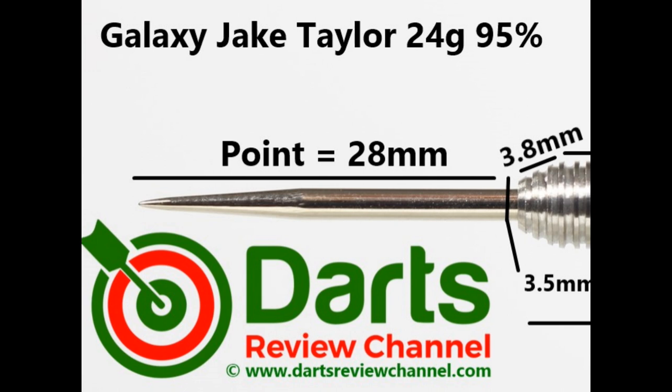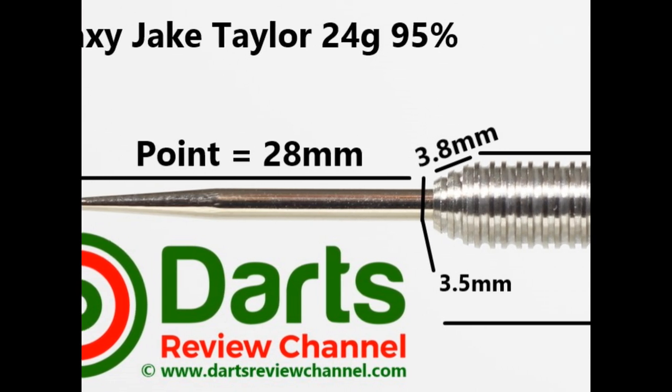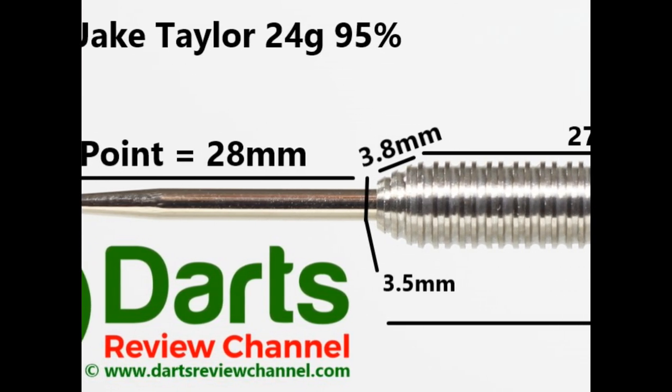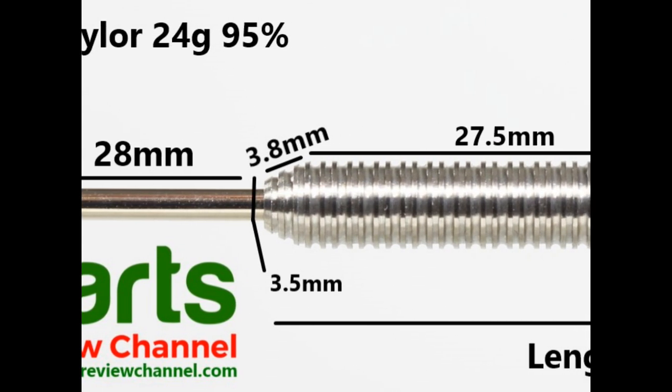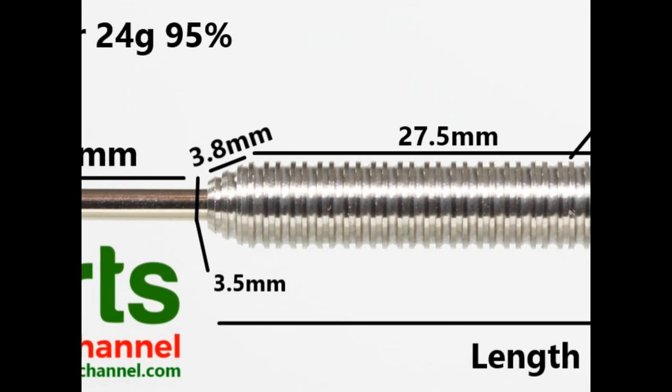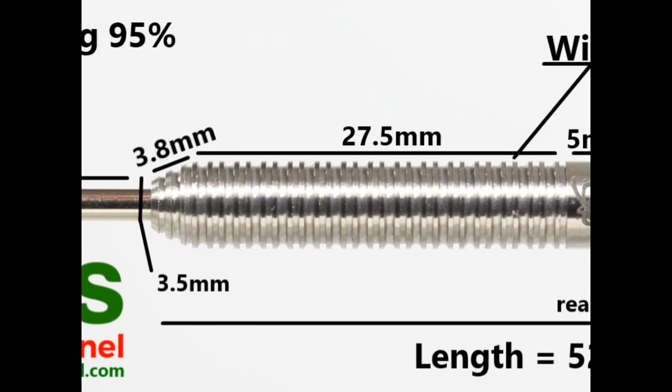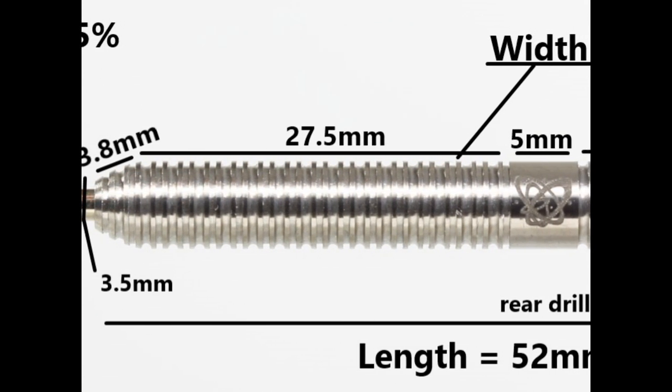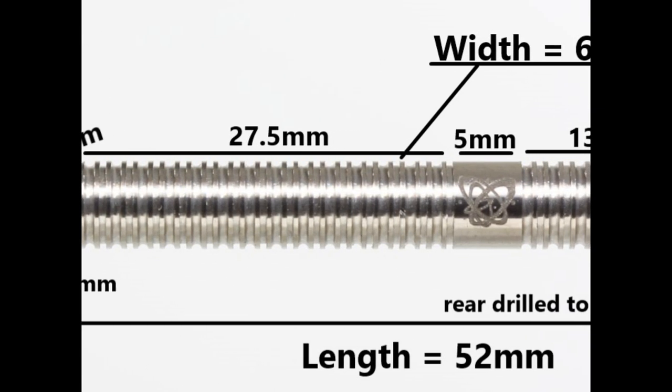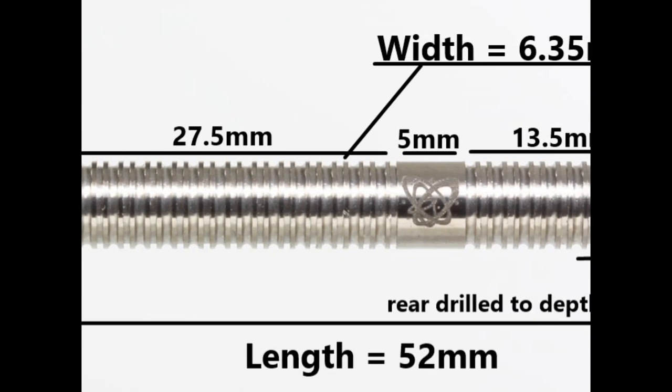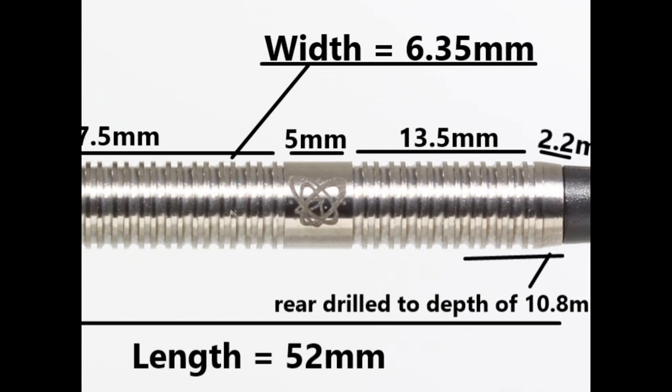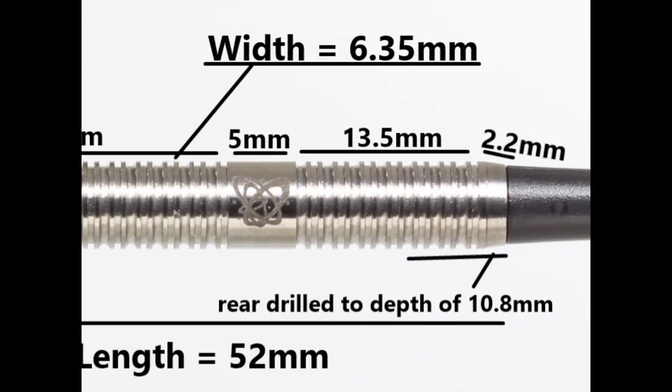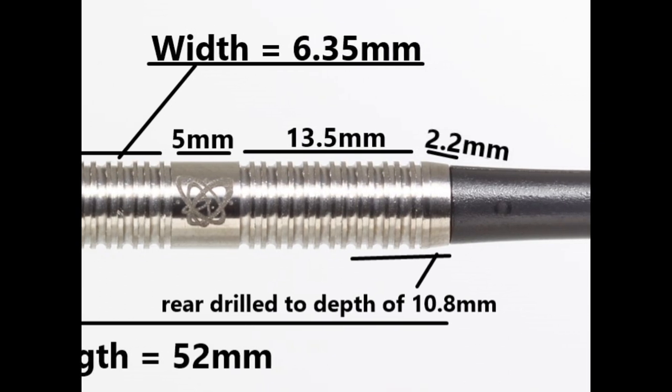The darts fit with a silver 28 millimeter point. There's a slight taper at the front, 3.8 millimeters, but still has the thin ring grip. Then a section of the double thin ring grip which is 27.5 millimeters, before you get into a smooth section of 5 millimeters. Then more of the double ring grip, 13.5 millimeters, and then a small tapered smooth section, 2.2 millimeters. Length 52 millimeters, width 6.35 millimeters.